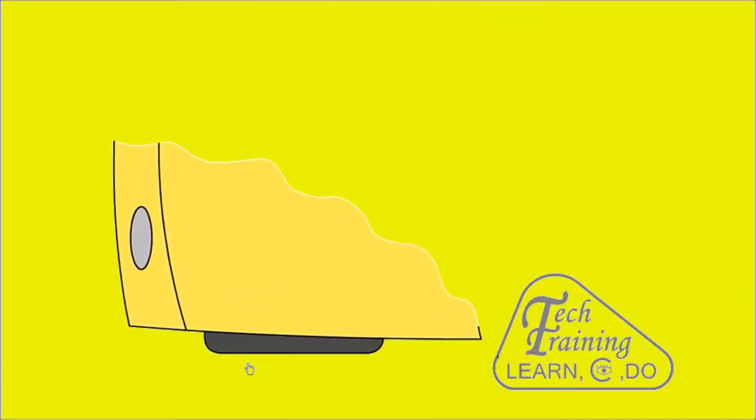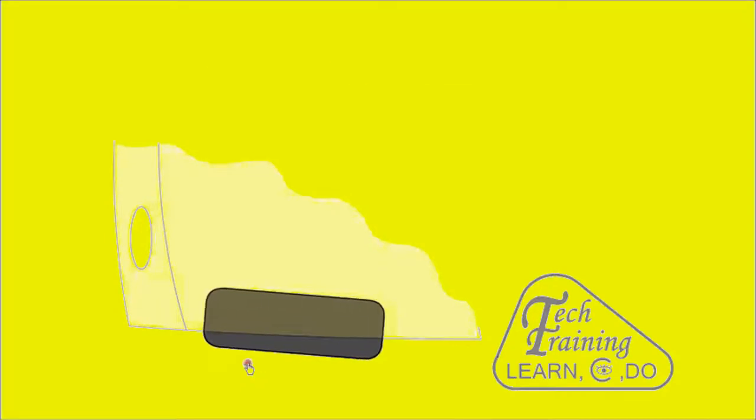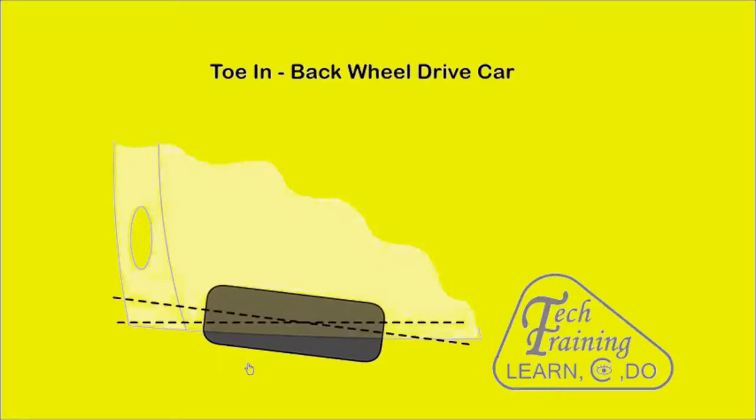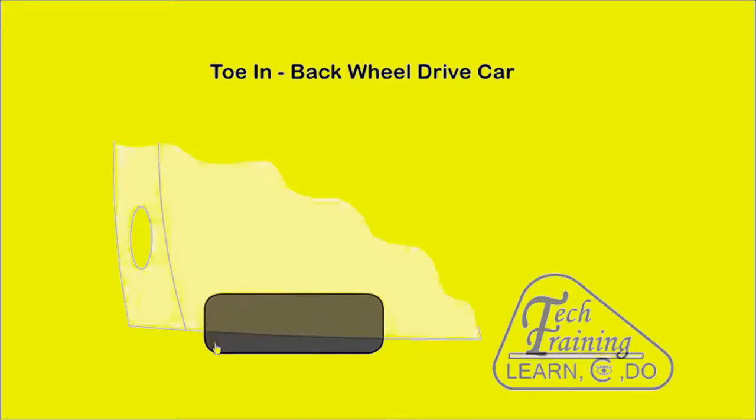Ideally, when a car is cruising on a straight road, the front wheels should be parallel. With toe-in, the front of the wheels are set slightly towards each other. This is normally used in a rear wheel drive car. When the back wheels drive the car, the front wheels tend to stay parallel or straight, as any slack in the steering system is taken up.